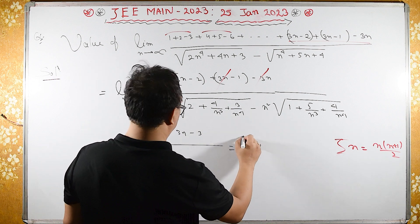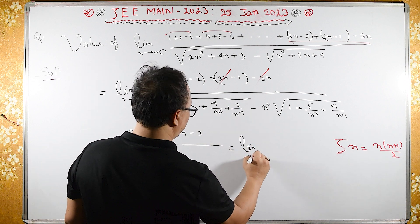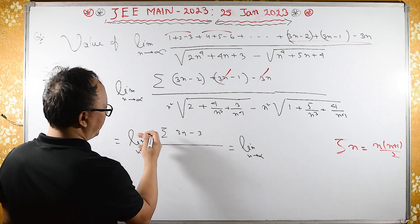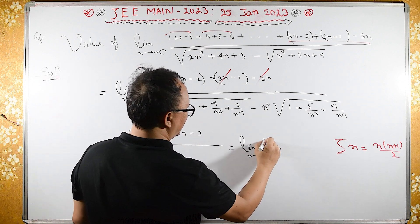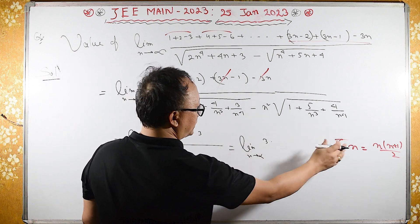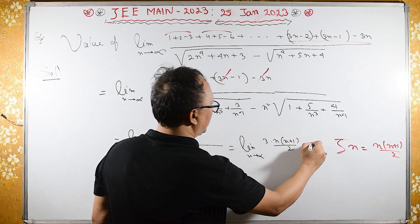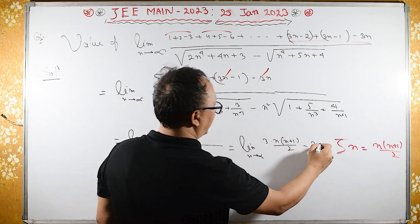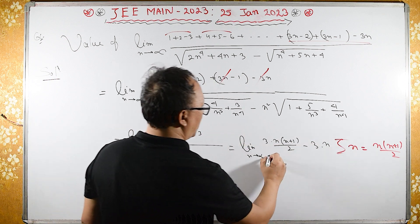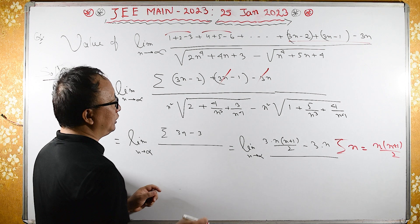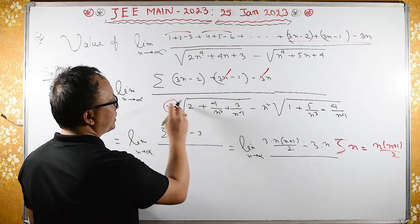And this is same as limit of n tends to infinity here, if I take this same as 3 into, summation of n is n into n plus 1 upon 2, and then 3 into, here we have n, upon, here, denominator, what we have is, highest power is n square over here.